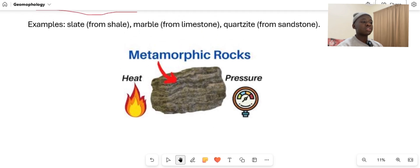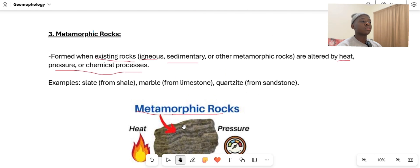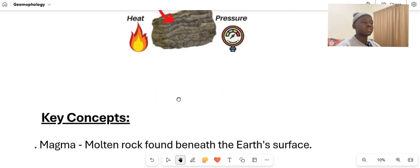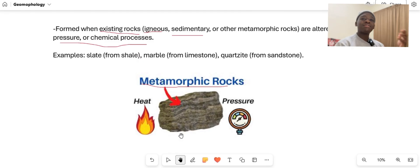Metamorphic rock is just the rock that has been put into pressure and turned into a metamorphic rock. Just make sure to keep in mind the formation of the rock, as well as when existing rocks are altered by pressure or chemical processes. That's the meaning of metamorphic rock.